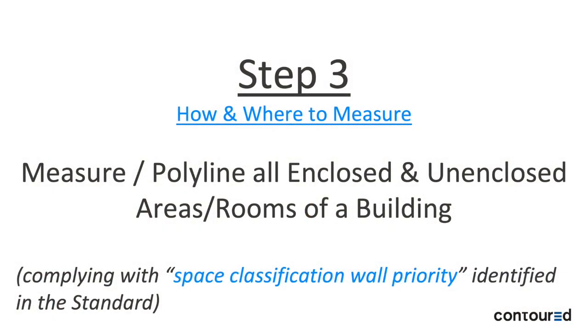Step three is we actually go and measure those rooms. This is an important step because we follow what is called wall priority. When we measure a room — for example, a stairwell — is the wall enclosing the stairwell part of the stair or part of the adjacent room? BOMA sets a priority to which room gets measured first. For the office standard, major vertical penetrations have the highest priority, so they always include their enclosing wall. When you measure a stair or elevator, it includes the wall.